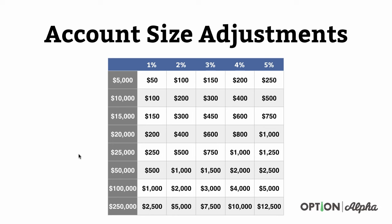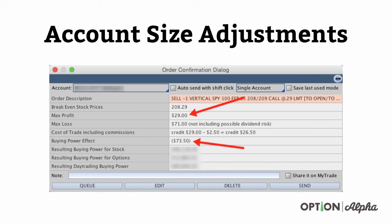The one asterisk here is that we have to make sure the trade size we're doing is appropriate for our account level. Sometimes, if you're trading really small accounts like under $5,000, it's going to be hard to find a trade that is 1% of your account balance, which is $50 of risk. Here's an example of a simple vertical credit spread that we put together on SPY.